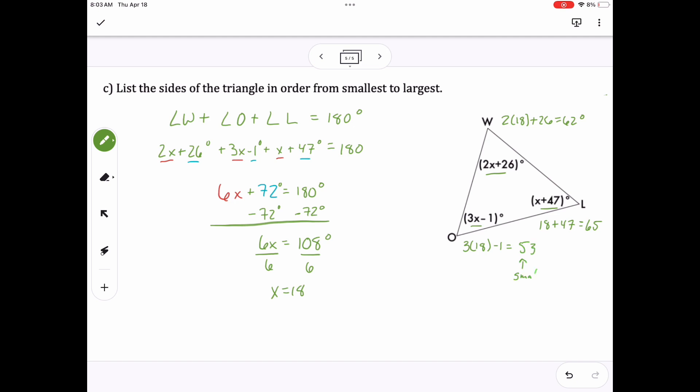So 53 degrees is the smallest, so that means WL is the smallest side. Angle L is the largest, so OW is the opposite, so it's the largest side. And so then OL would be in the middle. Okay? Have fun!